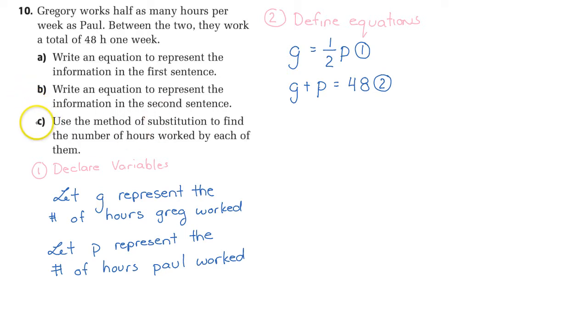They tell us specifically here to use the method of substitution to find the number of hours worked by each of them. If we want to think about a larger variety of questions, you really want to look at your system of equations and make an informed choice based on the situation. The reason why substitution is really nice here is because G is already isolated for us. I can substitute directly in. Step three is we're going to solve equations. We're going to sub one into two.